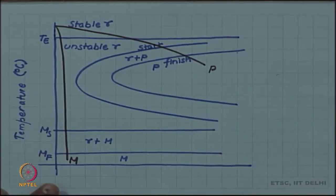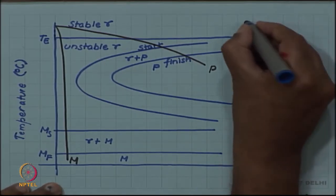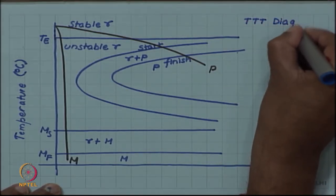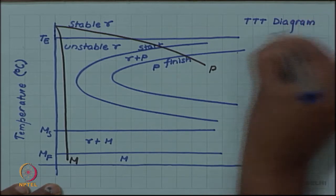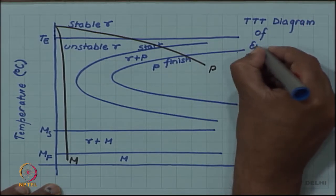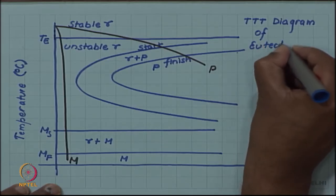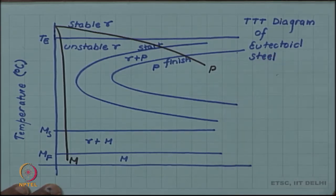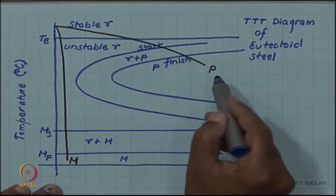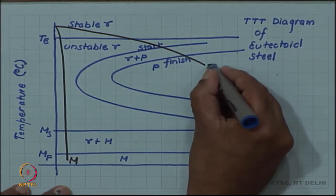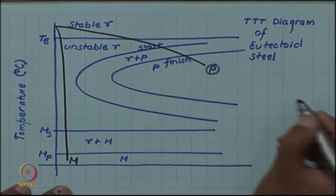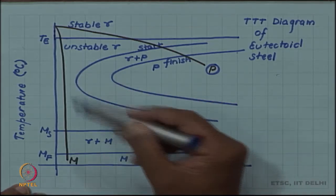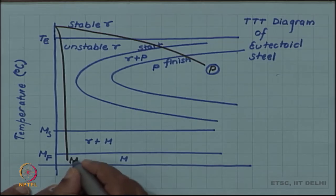We are familiar with the TTT diagram now. This is the TTT diagram of eutectoid steel, and we have seen how slower coolings will lead to formation of pearlite — either through annealing or normalizing — giving coarse pearlite or fine pearlite. A very fast quench or fast cool will lead us to martensite.